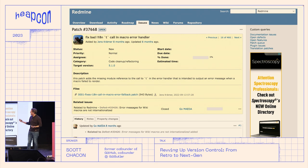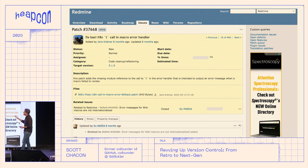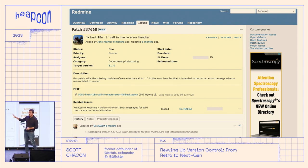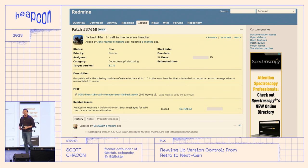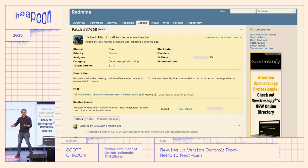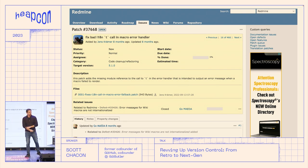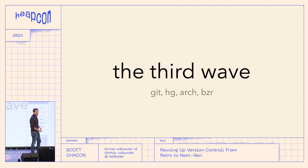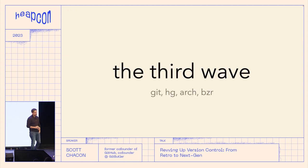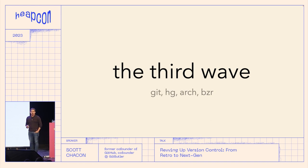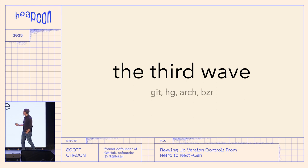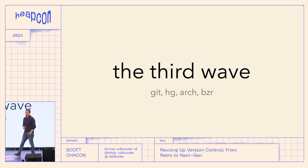A lot of people kind of forget how difficult open source was. In corporate work, everybody has write access to the server, so the workflows were a bit different. Then in the early 2000s, we had a third generation of version control tools: Git, Bazaar, Mercurial, Arch — all these distributed version control systems.